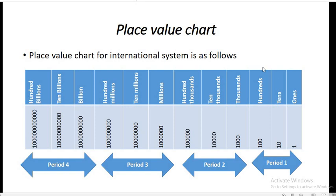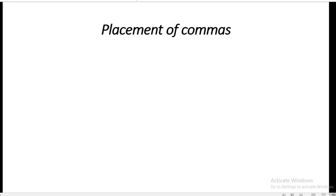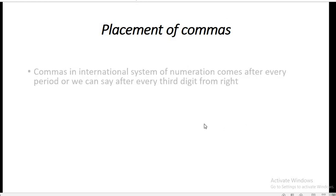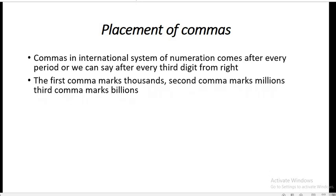Moving ahead, we have placement of commas. In order to read the number, we need commas to be placed so that easy reading becomes possible. Commas in the international system come after every third digit from the right — that is, after every period. So the first comma marks thousands, the second comma marks millions, and the third comma marks billions, and so on.